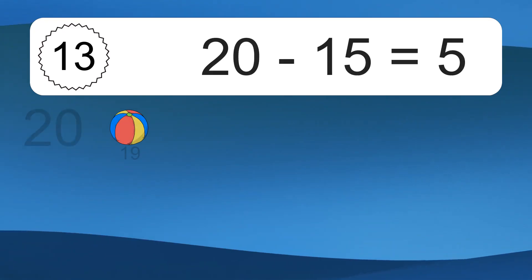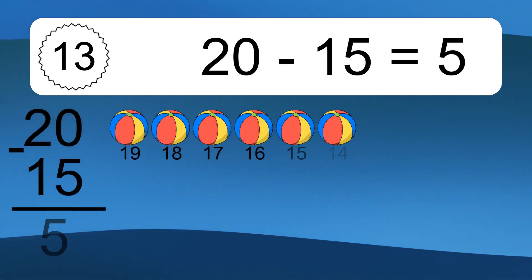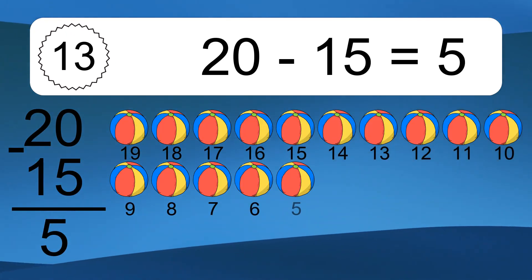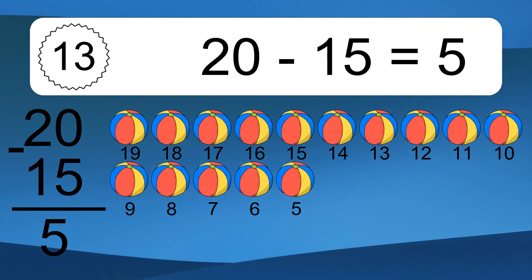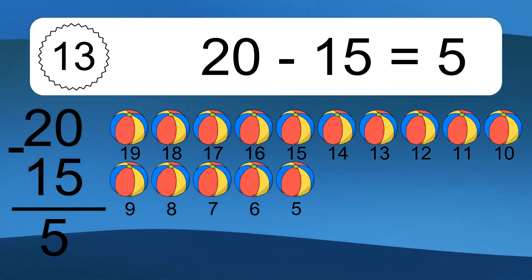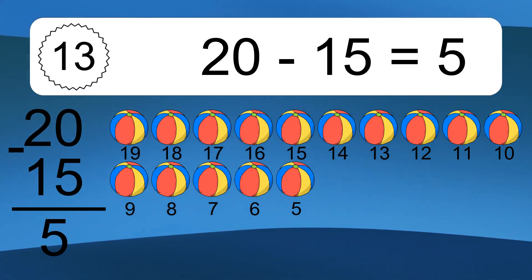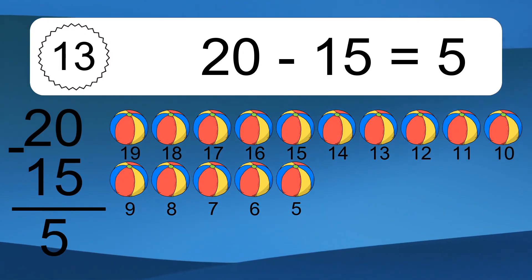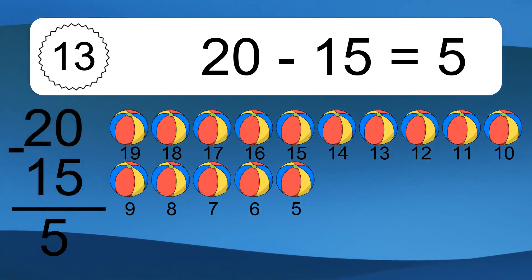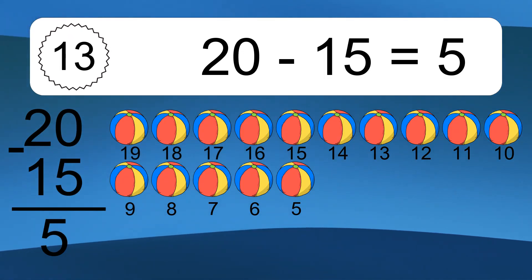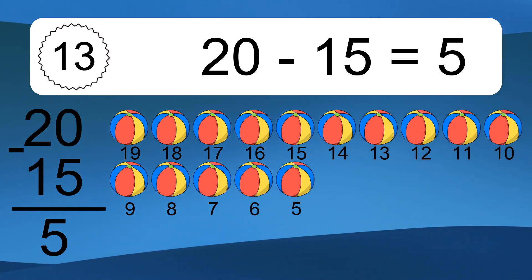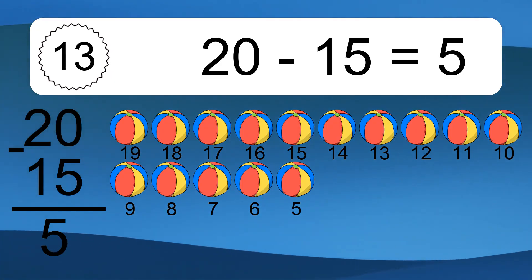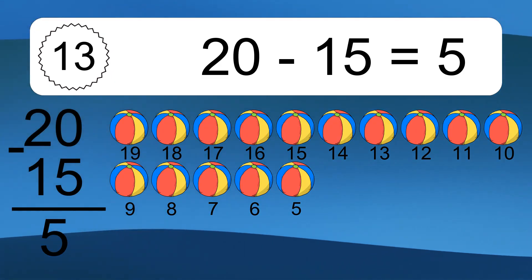14 minus 5 equals what? 20 minus 15 equals 5. Let's count it: 19, 18, 17, 16, 15, 14, 13, 12, 11, 10, 9, 8, 7, 6, 5.